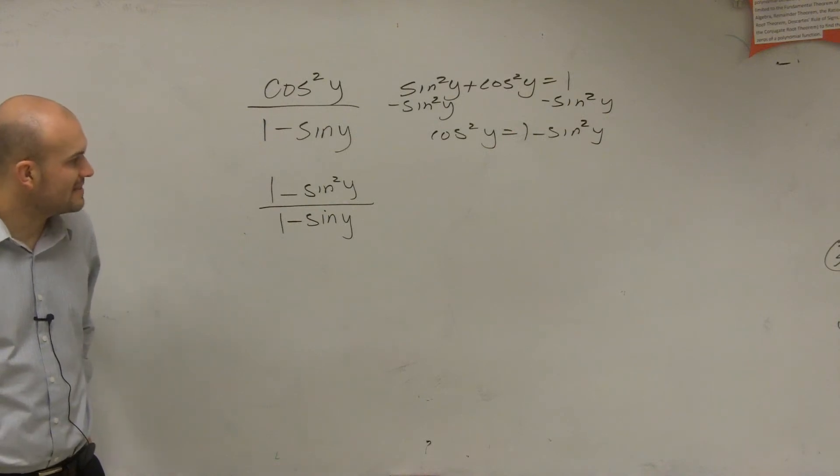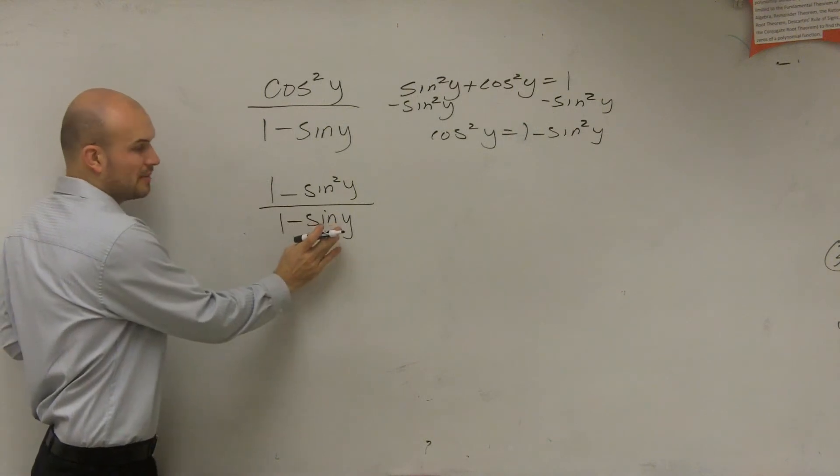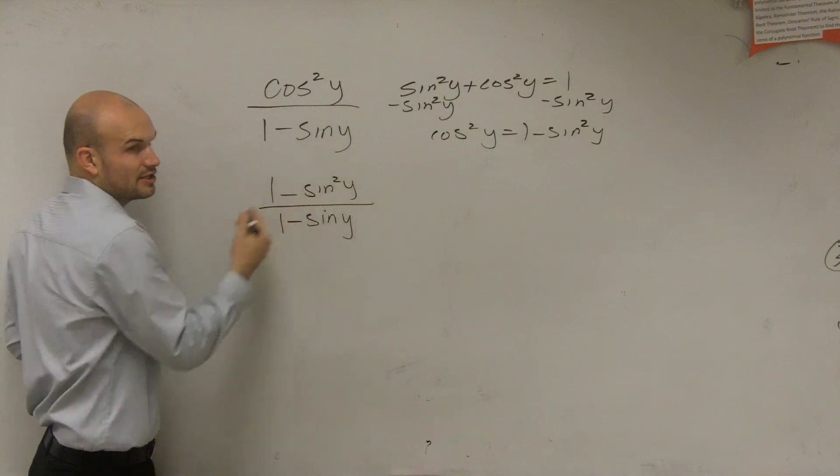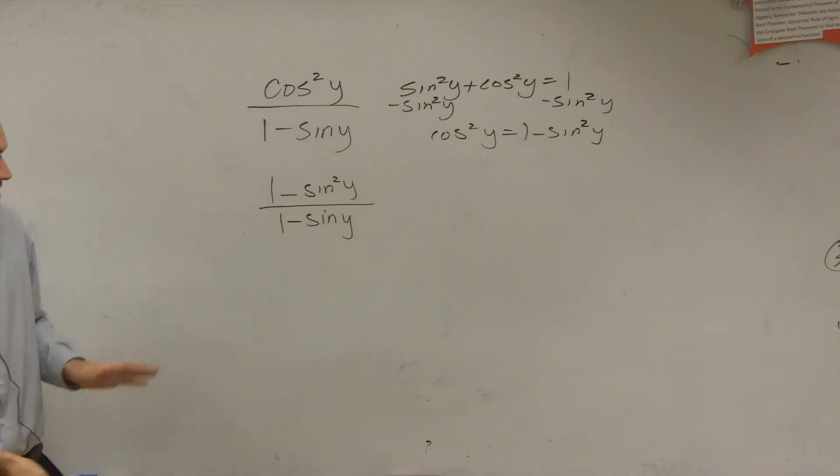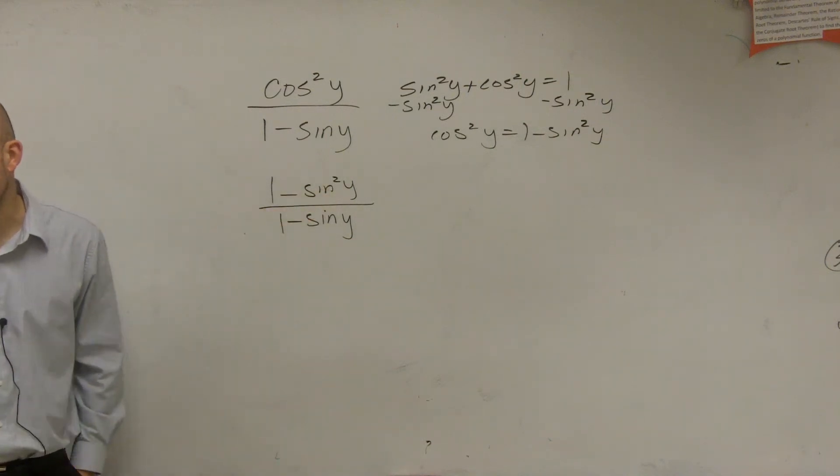So we just can't say it cancels out and just equals 1 minus sine. Remember, this term is divided under the 1, and this term is divided under the sine squared of y. So we just can't say it cancels out and just equals 1 minus sine. Let's see how maybe we can rewrite this in a little bit different term.